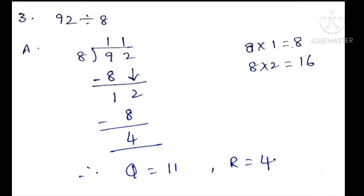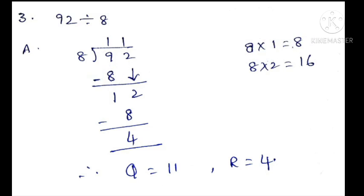Third question: 92 divided by 8. We have to recall the table of 8. What is the first digit here children? It is 9. See the table: 8 ones are 8, 8 twos are 16. Compared to 9, 16 is bigger. So we take 8 ones are 8. This 1 we write above the line, and this 8 we write below the 9. Subtract: 9 minus 8 is 1. Then we drop this 2 down — it becomes 12.